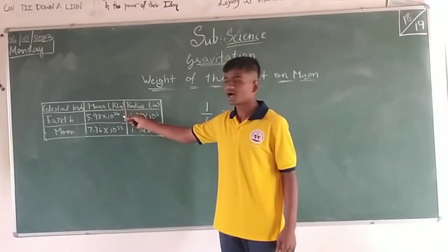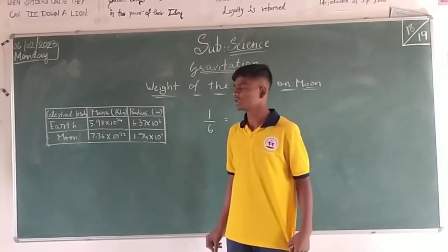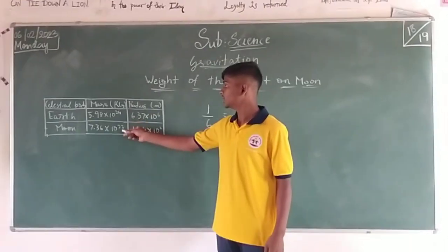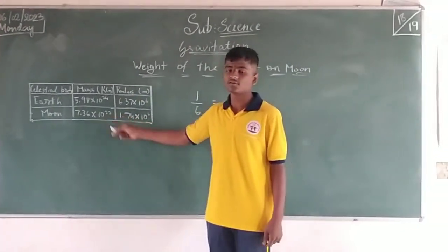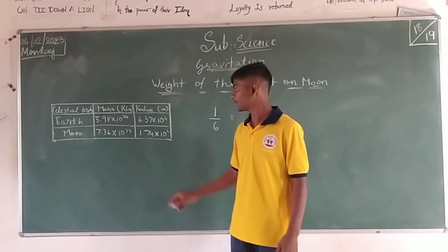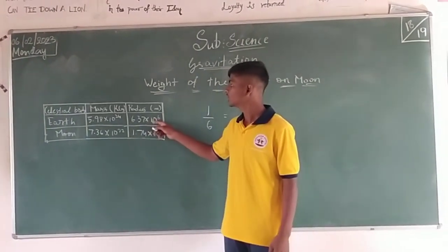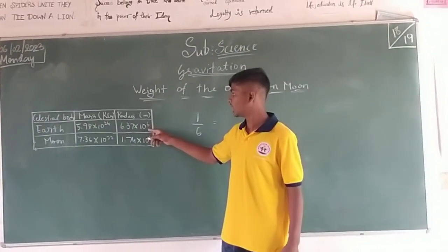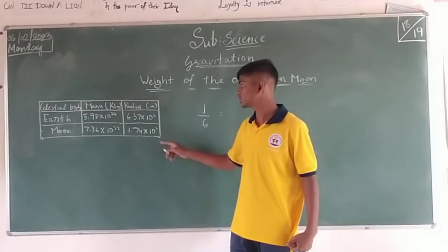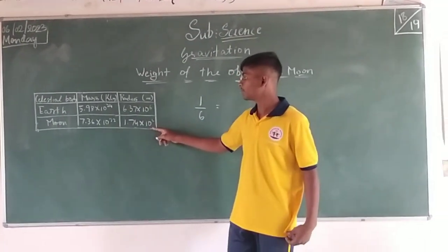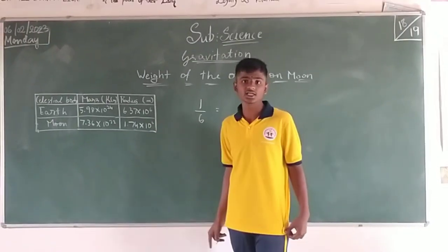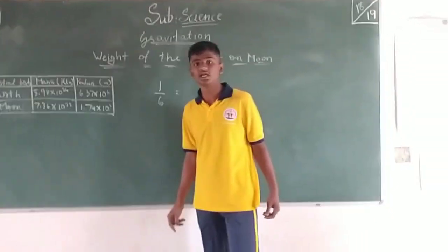The given values are: the celestial body Earth has a mass of 5.98 into 10 to the power 24, and the mass of the moon is 7.36 into 10 to the power 22. The radius of the earth is 6.37 into 10 to the power 6, and 1.74 into 10 to the power 6 is the moon's radius.